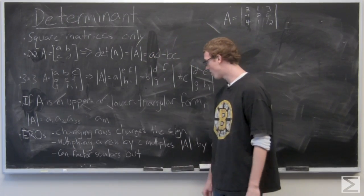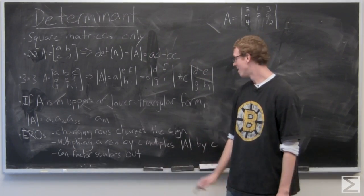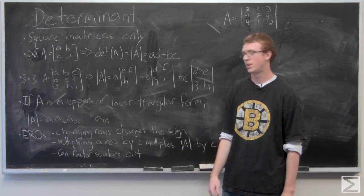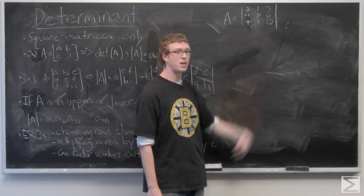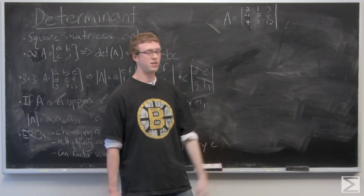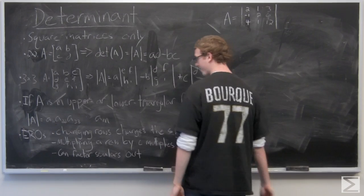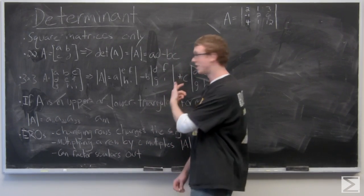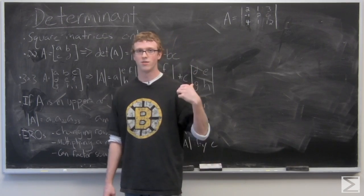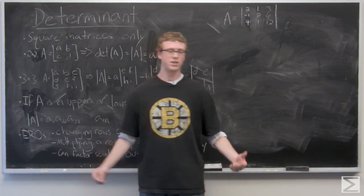Multiplying a row by a scalar C multiplies the entire determinant by C. So if we thought it would be easier to multiply the second row up here by two, we would have to multiply the determinant by two. And we can factor out scalars in front of the equation. What you're going to see when we take the determinant of A over here. So let's look at the example.